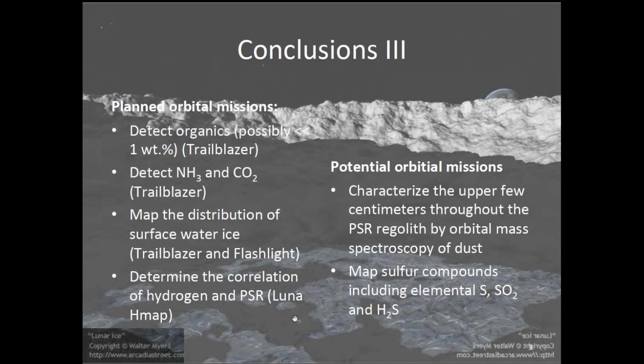We have planned and potential future orbital missions. There is a strong possibility of organics in the surface; Trailblazer will be sensitive to that — possibly much below one weight percent. Bethany will tell us more about that. They also have the capability of detecting ammonia and carbon dioxide. Trailblazer and Flashlight will map the distribution of surface water ice and potentially some of these other volatiles. LunaH-Map will finally refine the correlation between hydrogen and temperature in the PSRs.